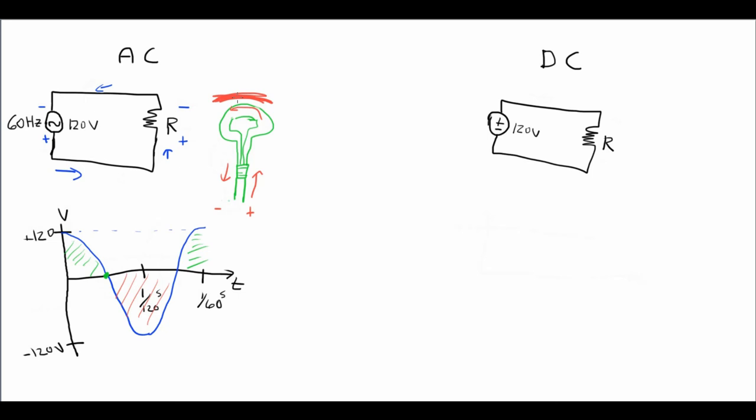DC on the other hand, this should be a lot easier to analyze because I have the positive on the top here. It's going to be pushing current in this direction, going down through the resistor like so and back the other side. So if I actually draw my voltage plot, I'm going to have 120 volts for all time.